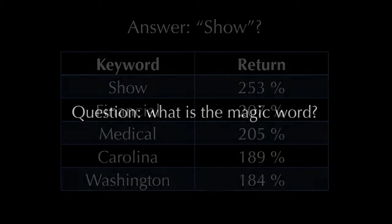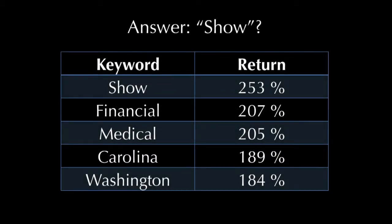The logical question is: what is the magic word with the highest return? You can run this simple analysis on thousands of keywords and look at the winners — and here are the top five. Apparently the magic word is 'show,' with a return of 253%. But clearly you can't learn anything from this analysis, because it's not clear what, if anything, these keywords have to do with each other. It might be a bad question to begin with, because we could just be seeing artifacts of noise — statistical fluctuations where we're not really learning anything.